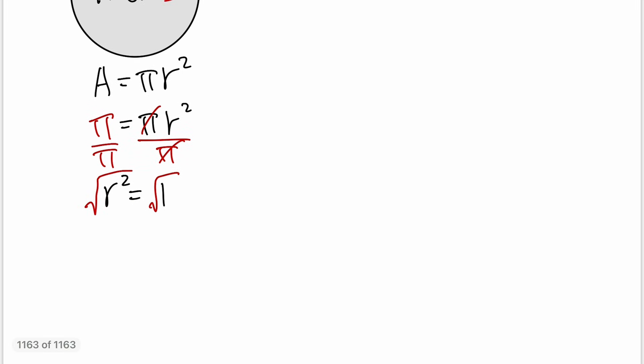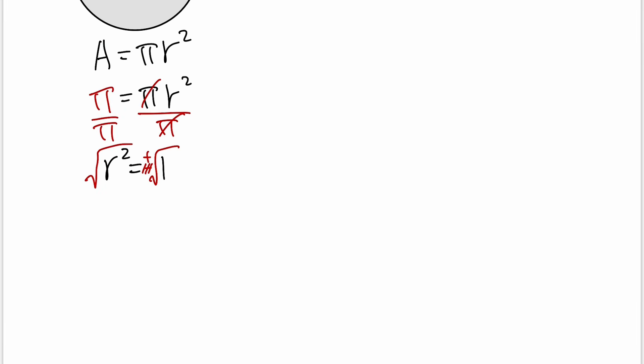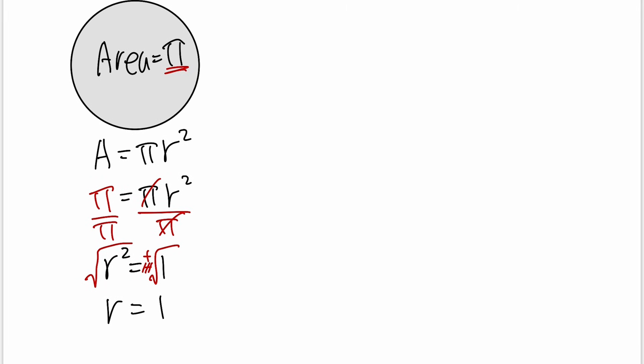And then we can take the square roots to both sides. Usually when we do this we put plus minus, but we're talking about geometry, we don't want negative lengths, so r is just equal to 1. So yes, it's possible for circles, easy, and all you have to do is just make sure that the radius is equal to 1.